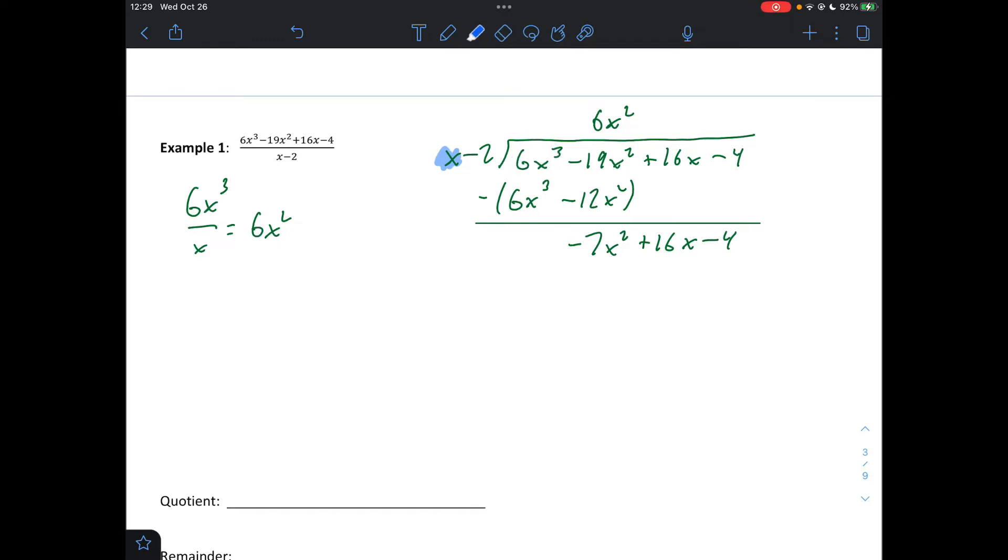All right. So now we divide x into this term. So negative 7x squared over x, and that's negative 7x. Put that here, negative 7x. And then repeat the process here. So next is to multiply. Next is to subtract. Bring down the 4, and then repeat the process one more time.